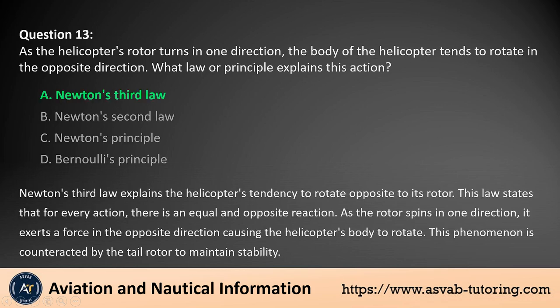The answer is A. Newton's third law explains the helicopter's tendency to rotate opposite to its rotor. This law states that for every action, there is an equal and opposite reaction. As the rotor spins in one direction, it exerts a force in the opposite direction causing the helicopter's body to rotate. This phenomenon is counteracted by the tail rotor to maintain stability.